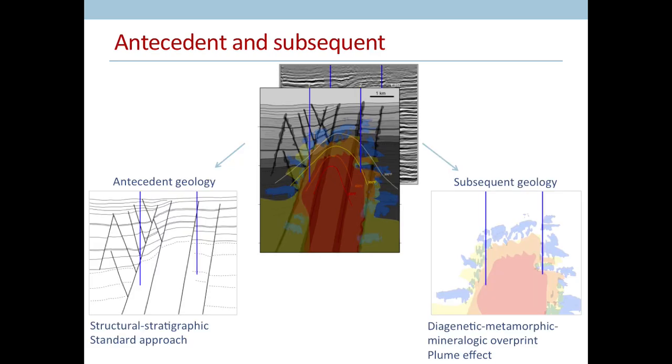Conceptually speaking, this geothermal system can be separated out into two parts. The antecedent geology, which is something we could target using standard seismic interpretation methods. And then there's the subsequent geology, with the hydrothermal metamorphism and diagenesis. A conventional seismic interpretation, picking horizons and faults, would not only be difficult in this area, but it may, in fact, tell us very little about the system components we're interested in.